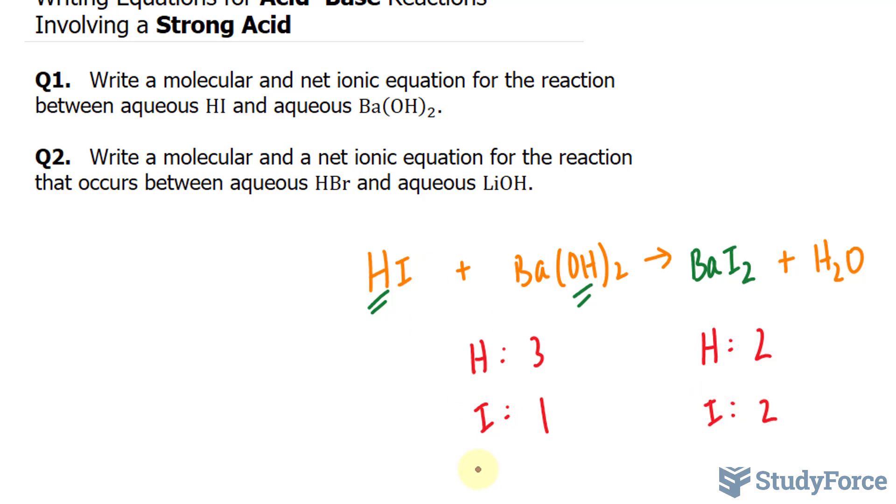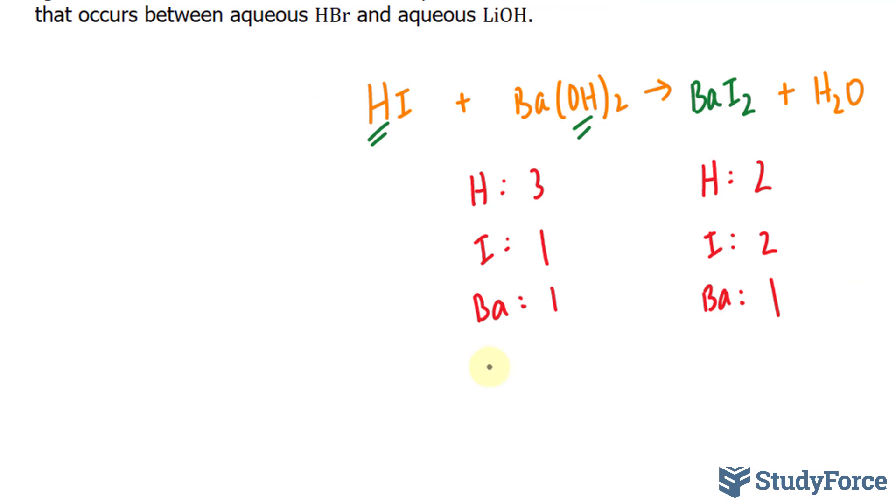Then we have one barium on the left side and one on the right side. And finally, we have two oxygens and one oxygen.